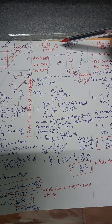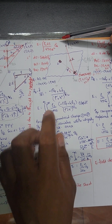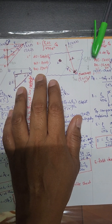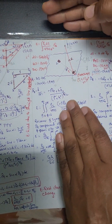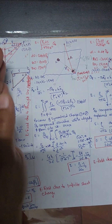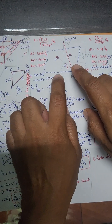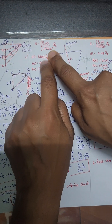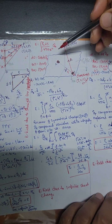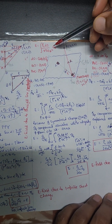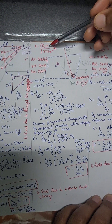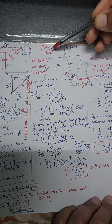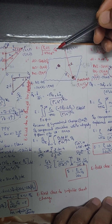We are going to calculate the E field due to the infinite sheet charge. The formula is rho_S ds by 4 pi epsilon r squared a_r. Here we need to find out what is ds, what is r, and what is a_r.